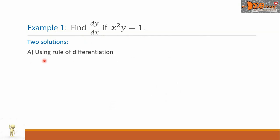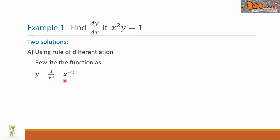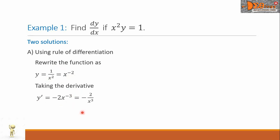Solution A is by using the rules of differentiation. First, let us rewrite the function as y equals 1 over x squared. Let us simplify further the right side — this is equal to x raised to negative 2. Now the derivative y prime equals negative 2x raised to negative 3. We can rationalize our negative exponent, so our answer becomes negative 2 over x cubed. This is our derivative.